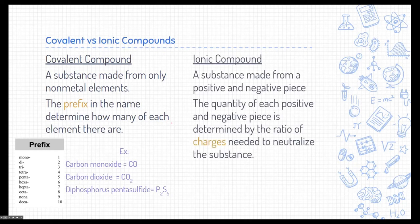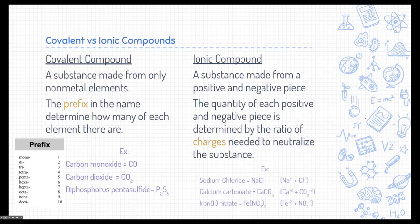Ionic compounds are a little bit different and often more challenging. An ionic compound is a substance made from a positive piece and a negative piece stuck together. The term ion means charge. The quantity of each positive-negative piece is determined by the ratio of charges needed to neutralize the substance. I've highlighted charges because that's information you can also find on the periodic table.